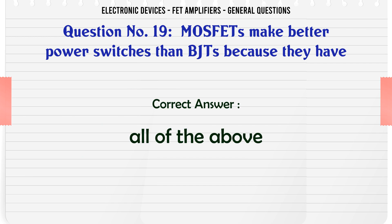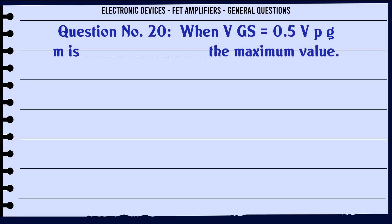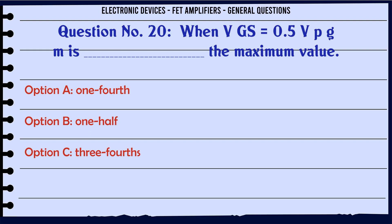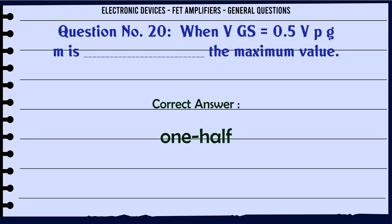When VGS = 0.5VP, GM is what fraction of the maximum value GM0? A. One-fourth. B. One-half. C. Three-fourths. D. (no option). The correct answer is one-half.